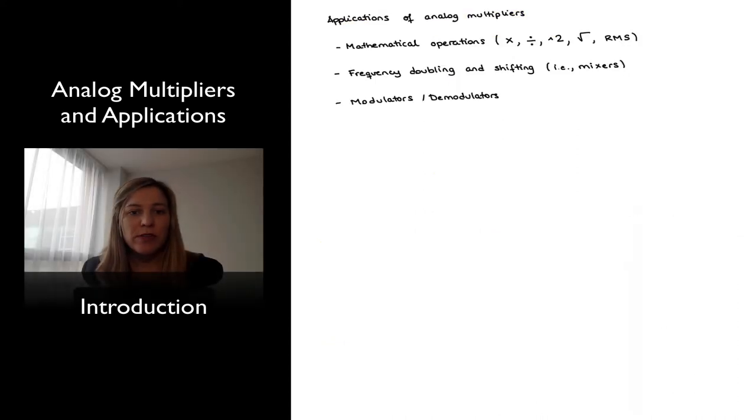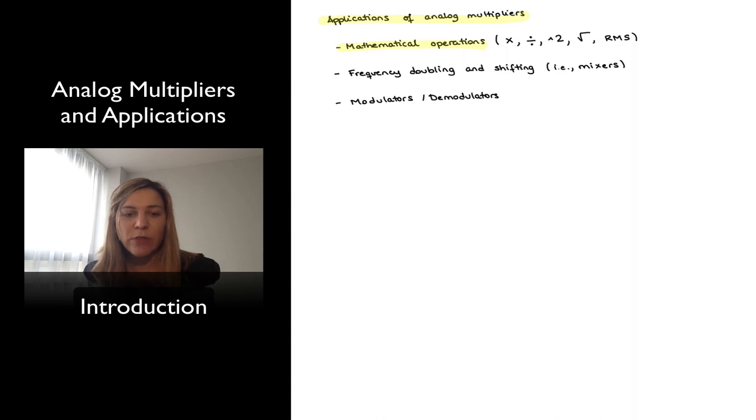So those are some of the basics of multiplier circuits. We're going to see particular applications of analog multipliers. There are many of them. The ones that we're going to focus on will be mathematical operations such as multiplication, division, the square of a signal, or the square root of a signal. Obviously, an analog multiplier can also be used to build RMS circuits, circuits that compute the root mean square, because that is a combination of a square root and a square.